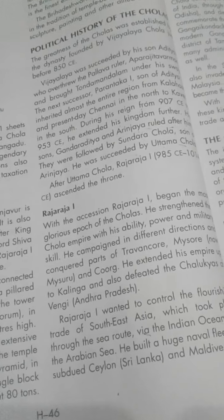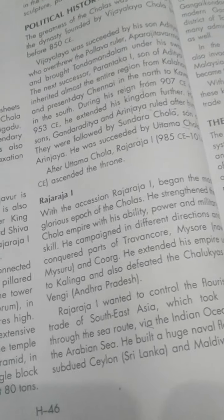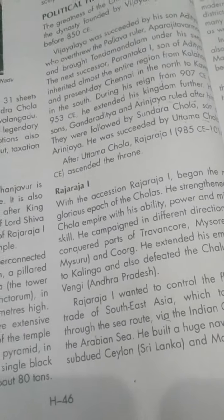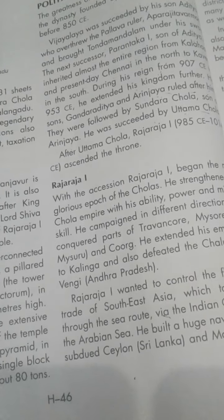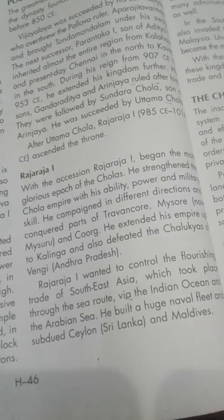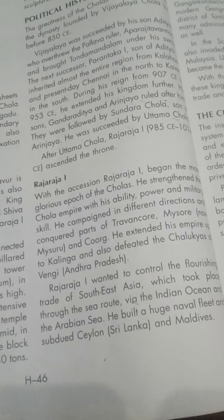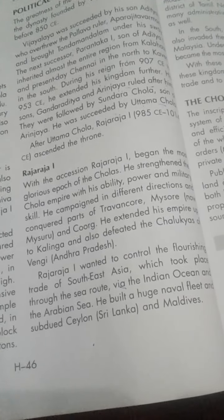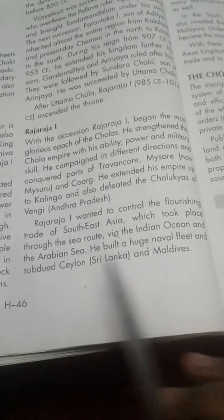Raja Raja I was the most powerful ruler of the Chola dynasty. Under his reign, the empire reached its highest level. He extended his empire up to Kalinga and defeated the Chalukyas. He also flourished trade through the sea route via the Indian and Arabian Oceans. He built a huge naval fleet and defeated Sri Lanka and the Maldives. He campaigned in different directions and conquered parts of Travancore, Mysore and Coorg. His naval fleet extended control to Ceylon, Sri Lanka and the Maldives.